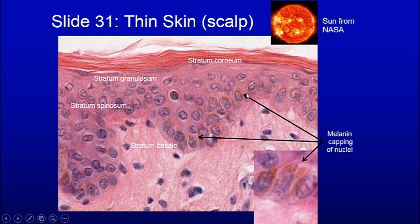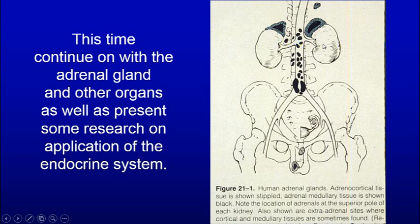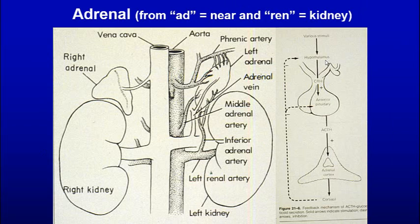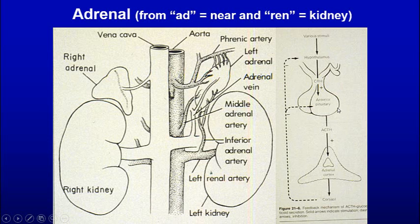Now we will look at the adrenal. The adrenal is near the renal — that's what the name stands for. Remember, from the pituitary we have adrenocortical hormones coming down here, stimulating the cortex, and you're getting negative feedback. The cortisol produced here has negative feedback to the anterior pituitary as well as the hypothalamus, preventing releasing factors for ACTH.